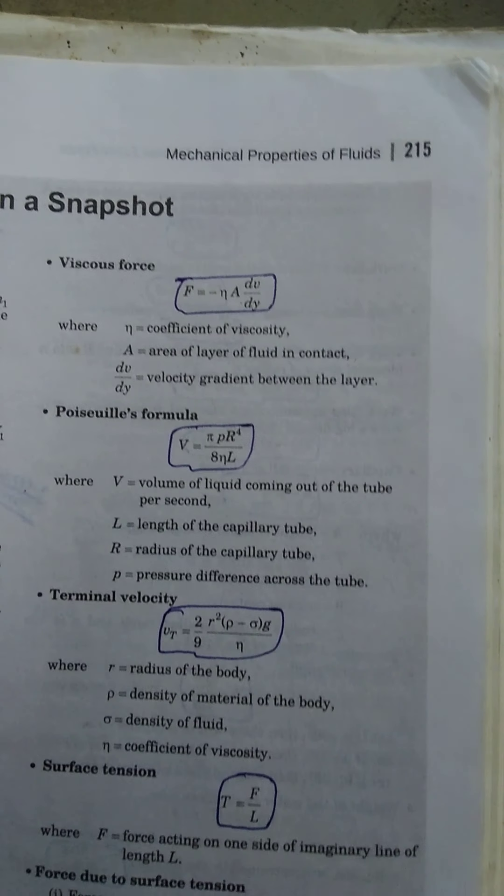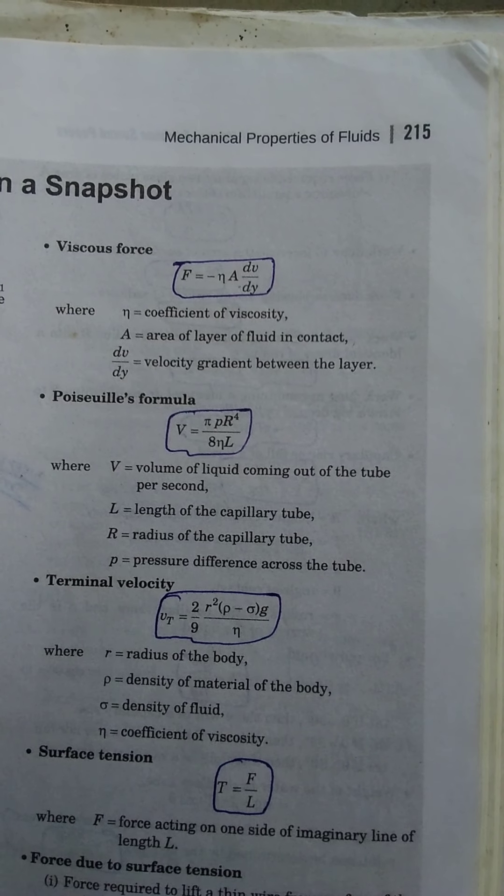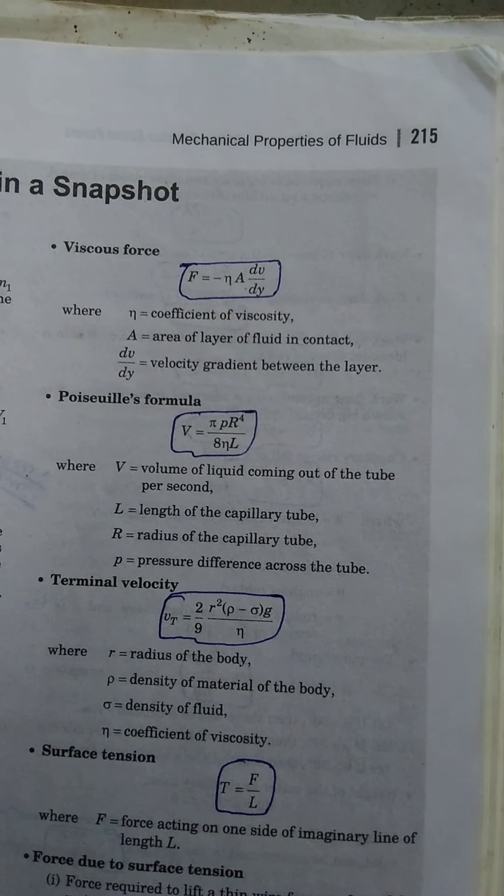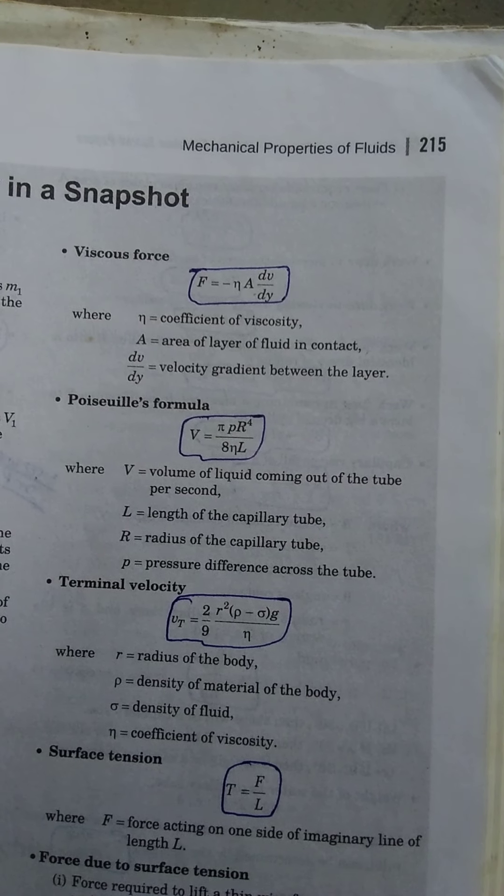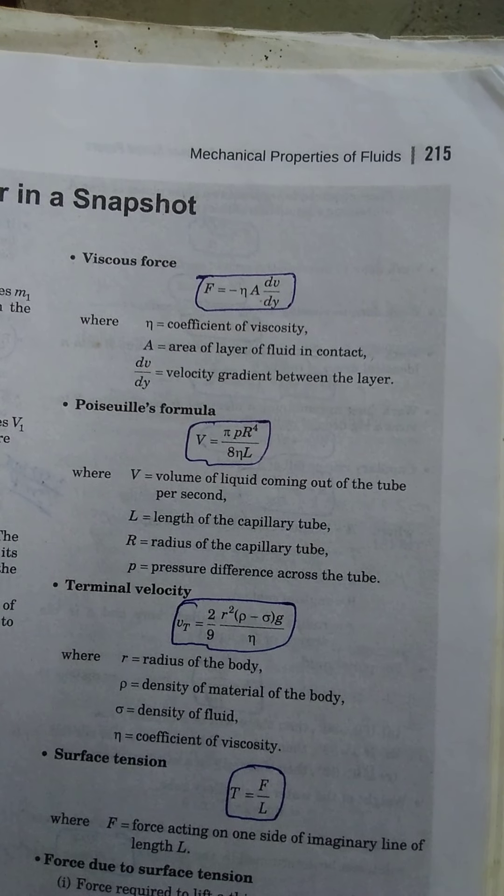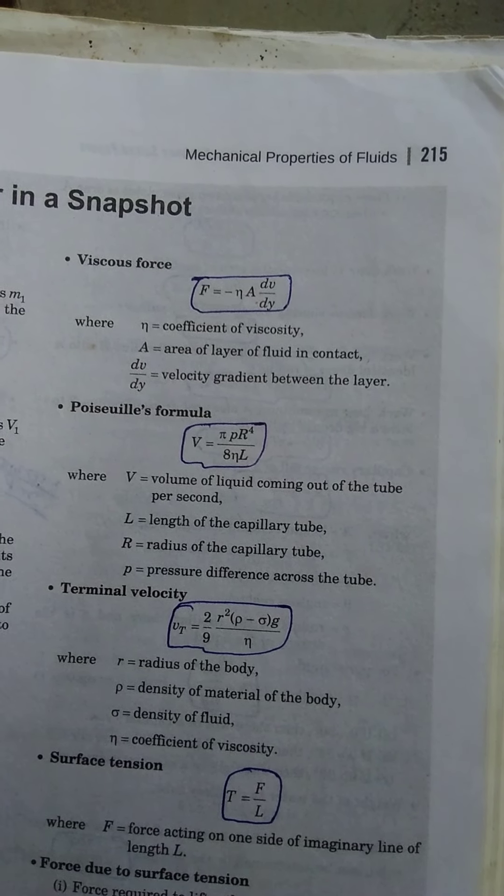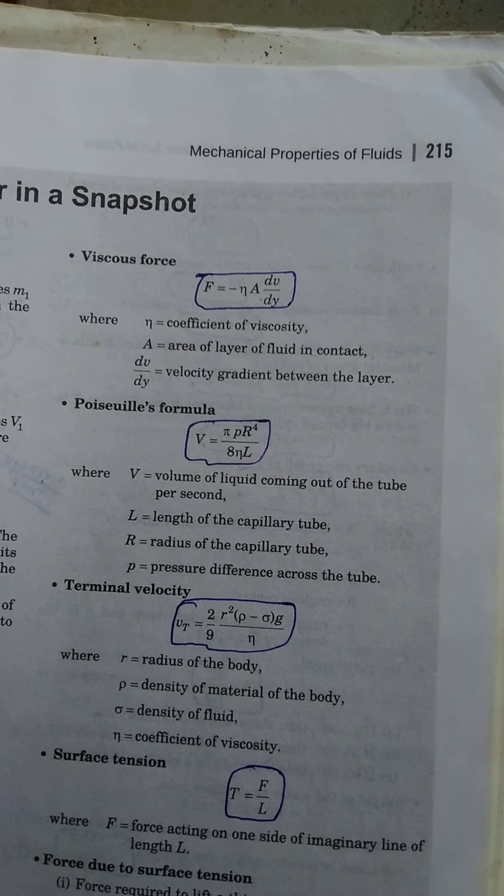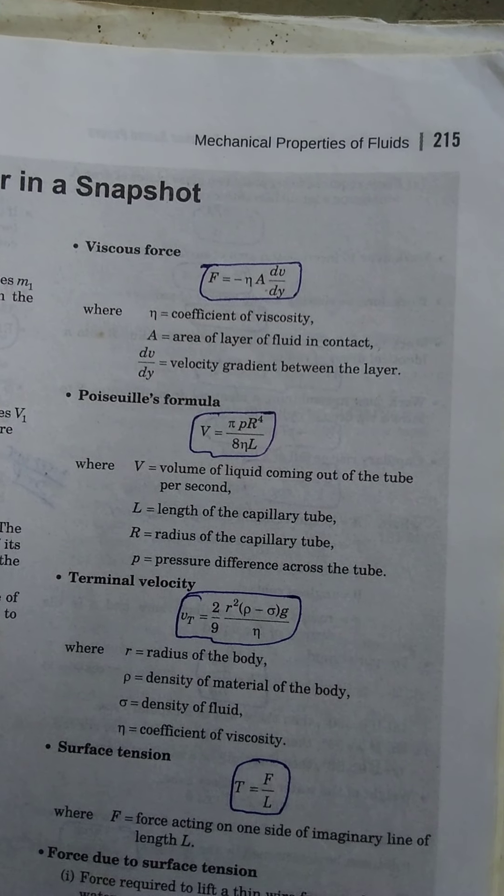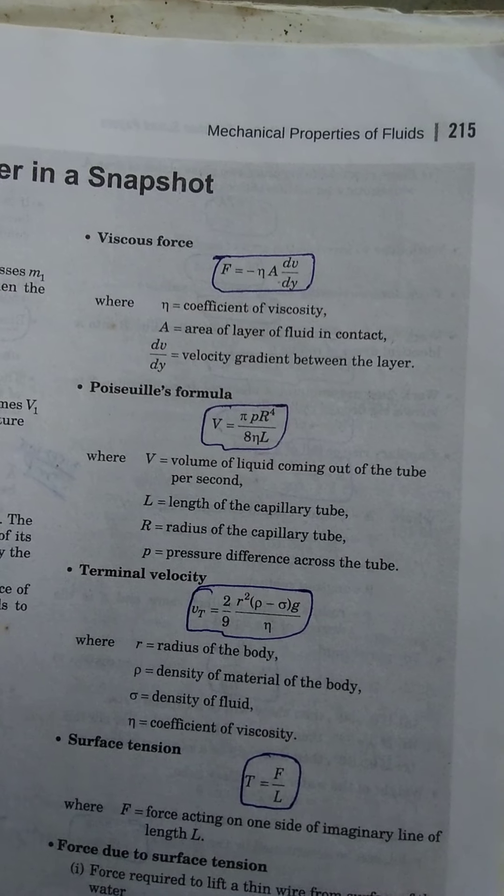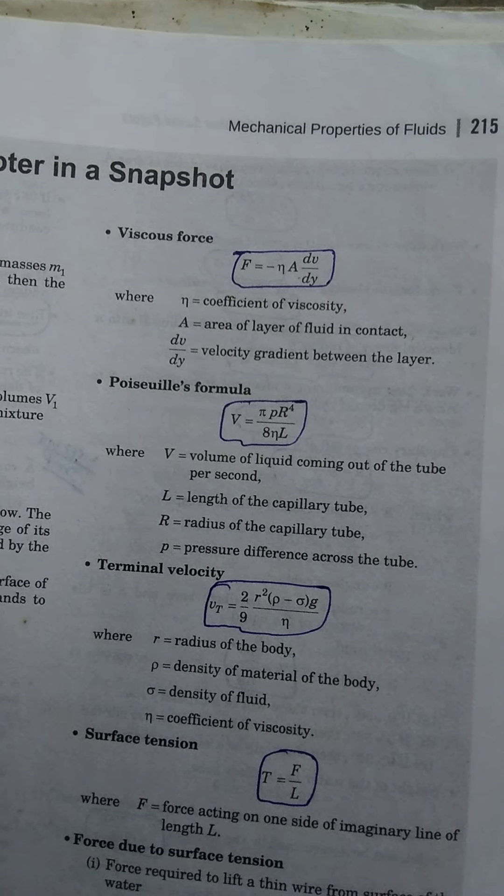Poiseuille's theorem: V equals πPr⁴/(8ηL), where V is the volume of liquid coming out of the tube per second, L is the length of the capillary tube, r is the radius of the capillary, and P is the pressure difference across the tube.